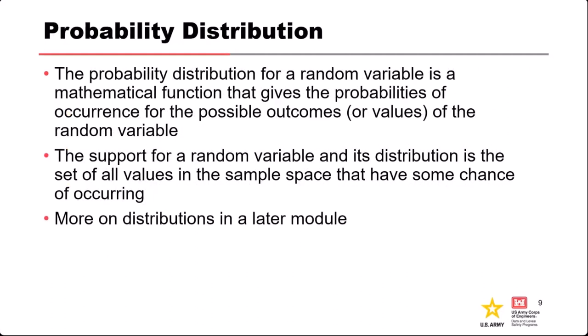One of the ways we can describe these probabilities for random variables is with probability distributions, which we'll cover in more detail later. The probability distribution for a random variable is a mathematical function that gives us the probabilities we're interested in — it tells us the relationship between the outcomes or values of the random variable and their probabilities.